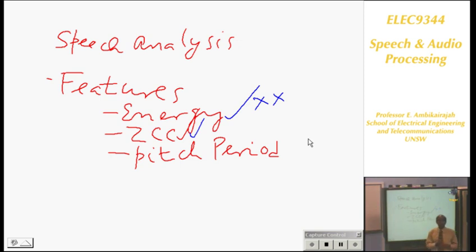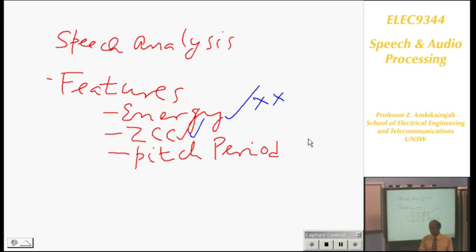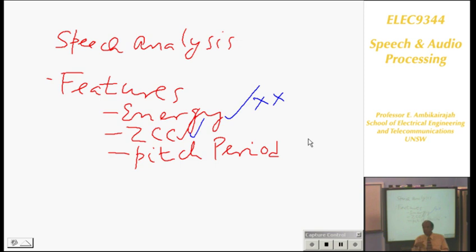Then we moved on to pitch period. Pitch period — you only estimate pitch period when the speech is voiced. What sort of techniques do you have for pitch period estimation? Autocorrelation and AMDF function. What's the difference? Autocorrelation involves multiplication; AMDF involves subtraction and absolute value. Autocorrelation gives you a peak if there's periodicity, whereas AMDF gives a null or dip.